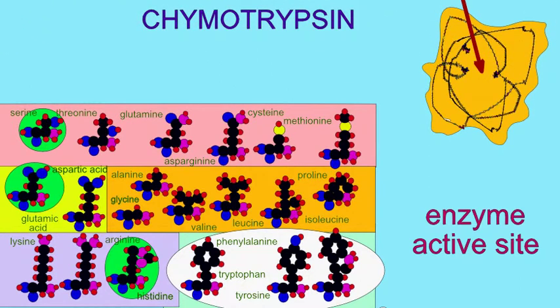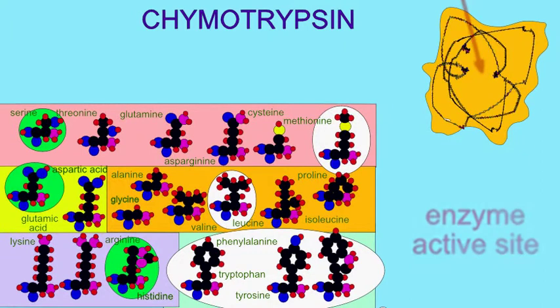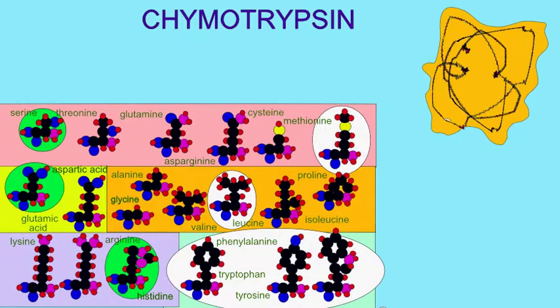It may also break bonds between other amino acids, especially if a leucine or methionine are the amino acids on the carboxyl side of the peptide bond. But tyrosine, tryptophan, and phenylalanine are the major amino acids where peptide bonds are broken.